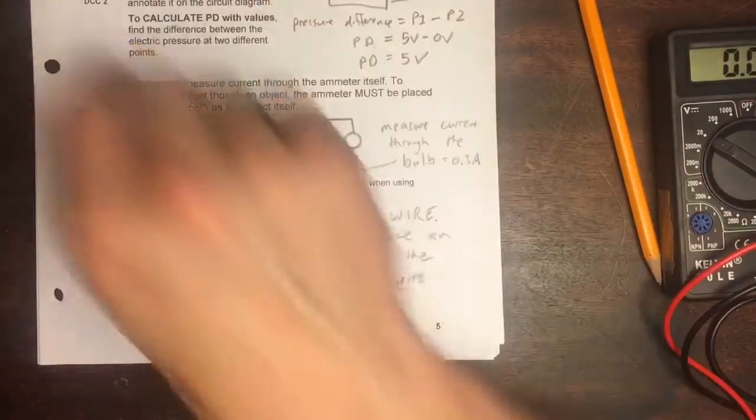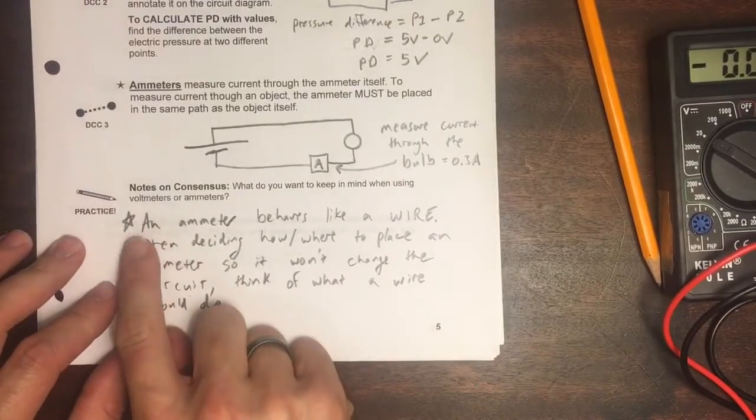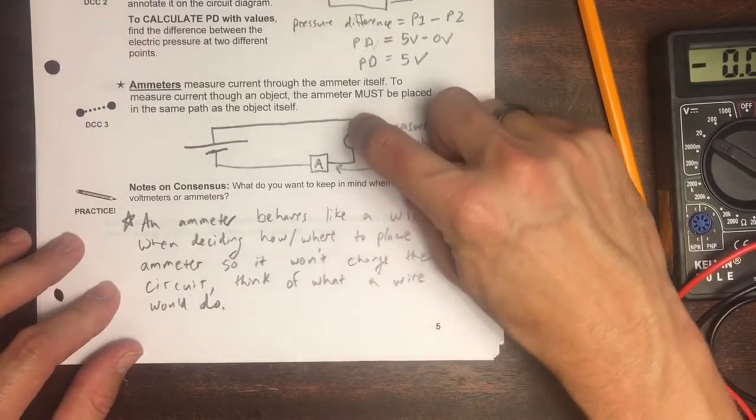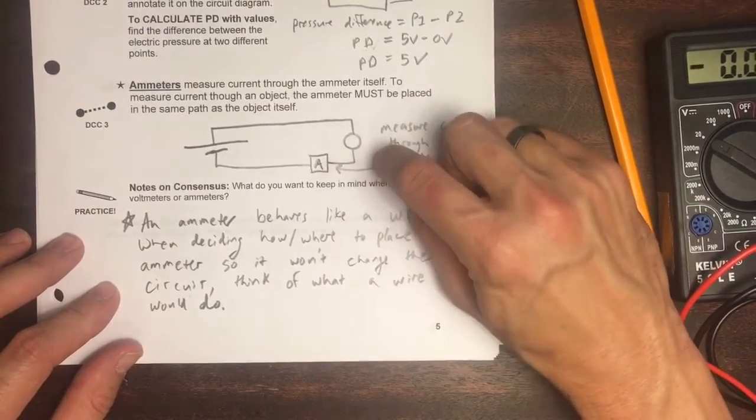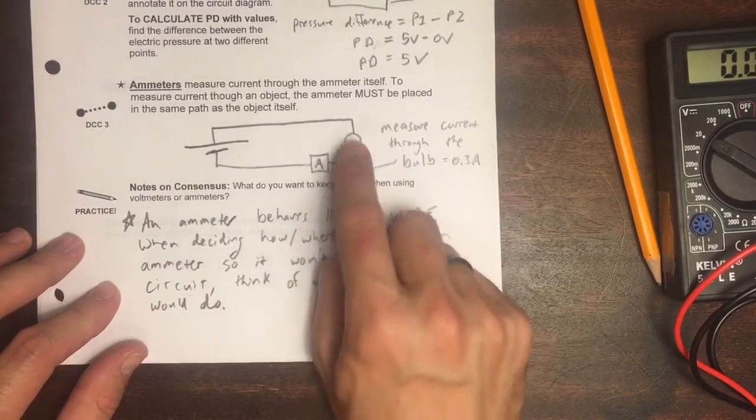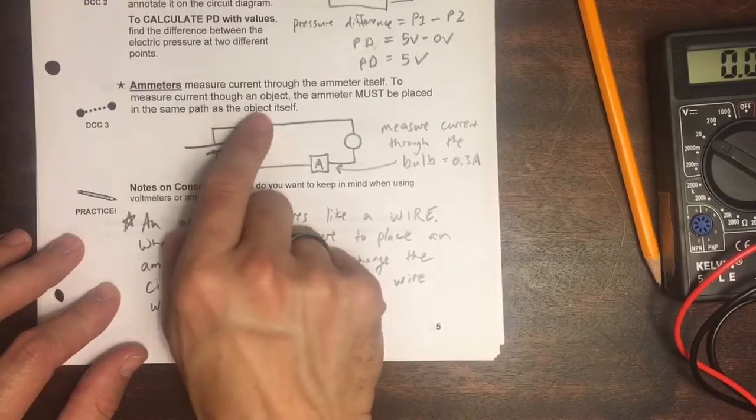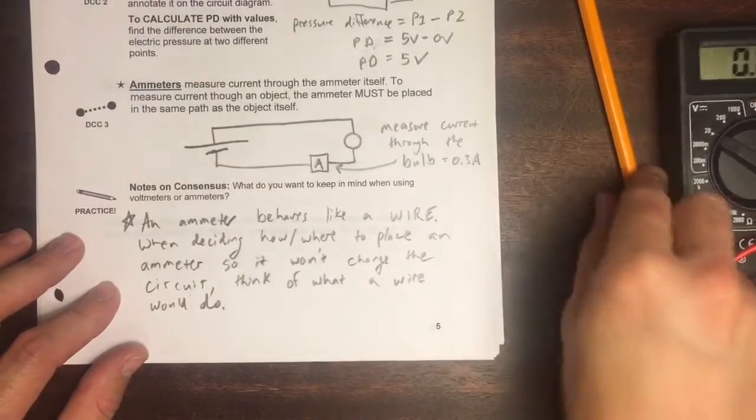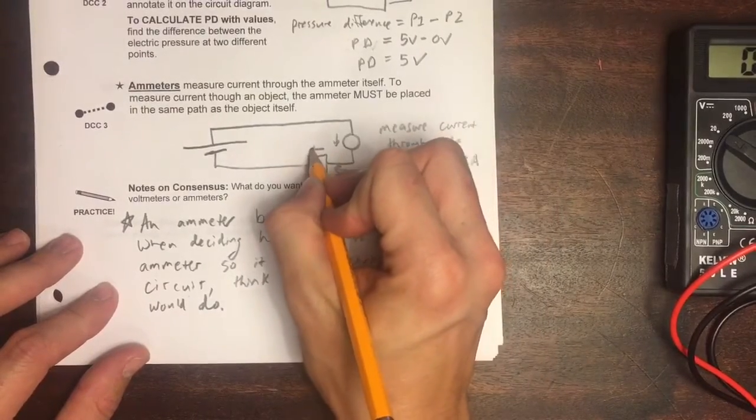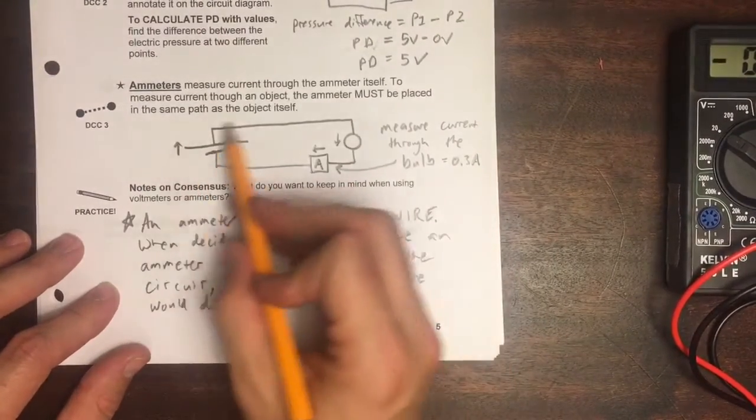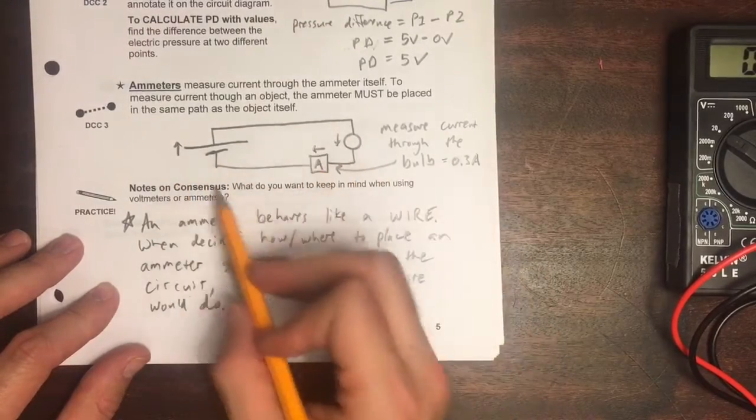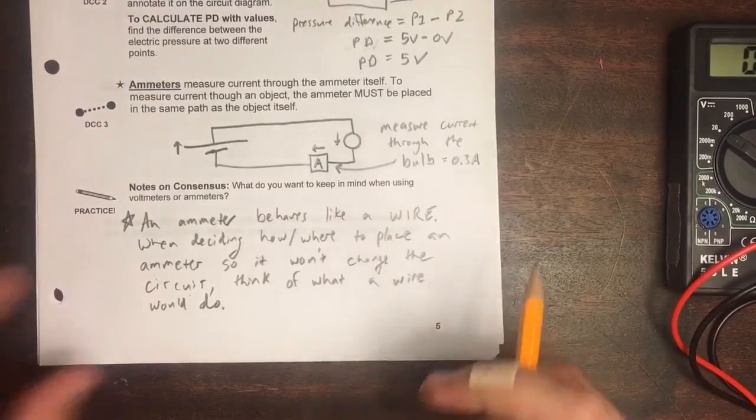So the way we would be able to figure that out ahead of time and not do that would be thinking that the ammeter behaves like a wire. We know that we can't just connect the ammeter across the bulb because that would short circuit the battery. The ammeter needs to be placed in the same path as the bulb to measure the current through the bulb. To show that more clearly, I can put a little arrow here, a little arrow here, and a little arrow here, showing that the current through all three of these objects is exactly the same. The current through the ammeter and the current through the bulb are the same.